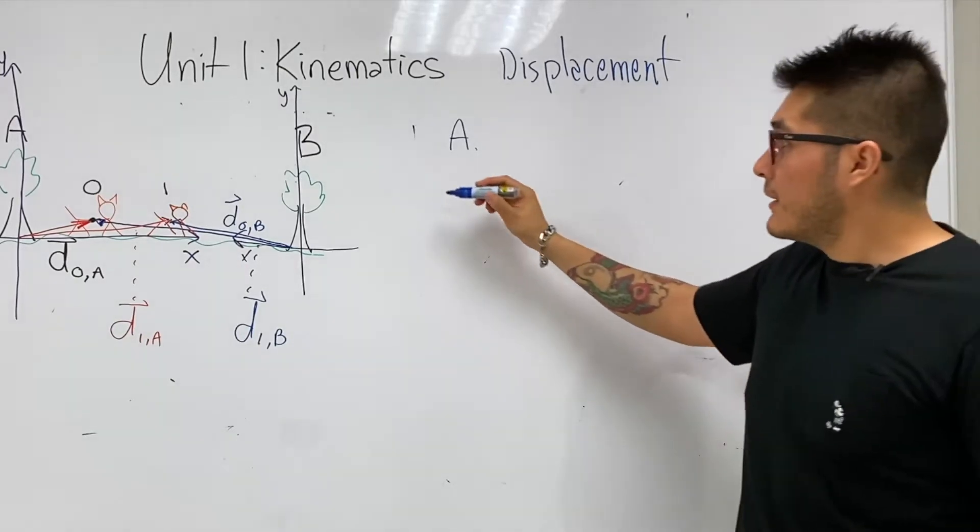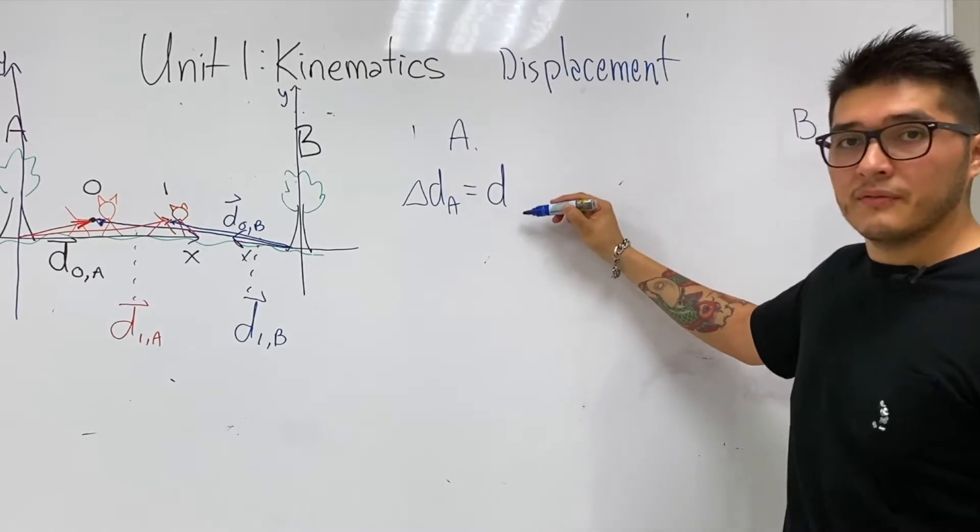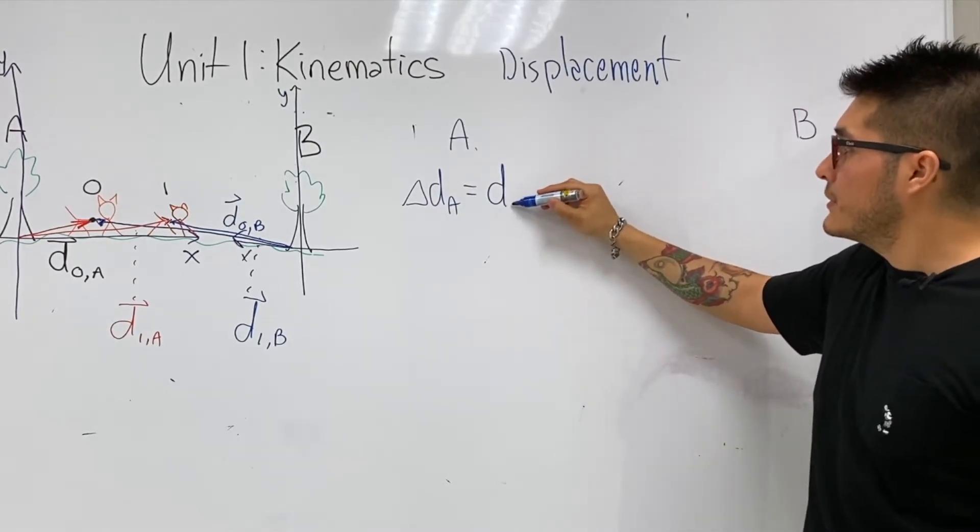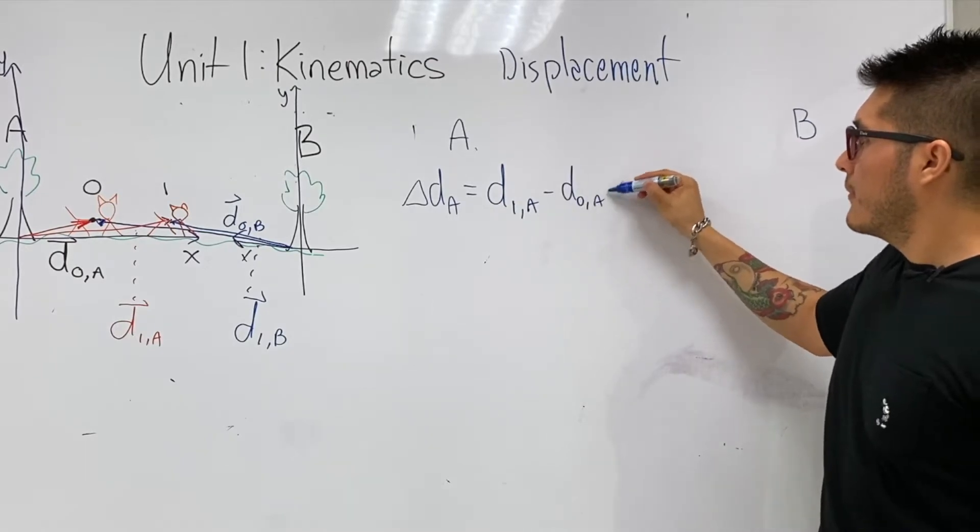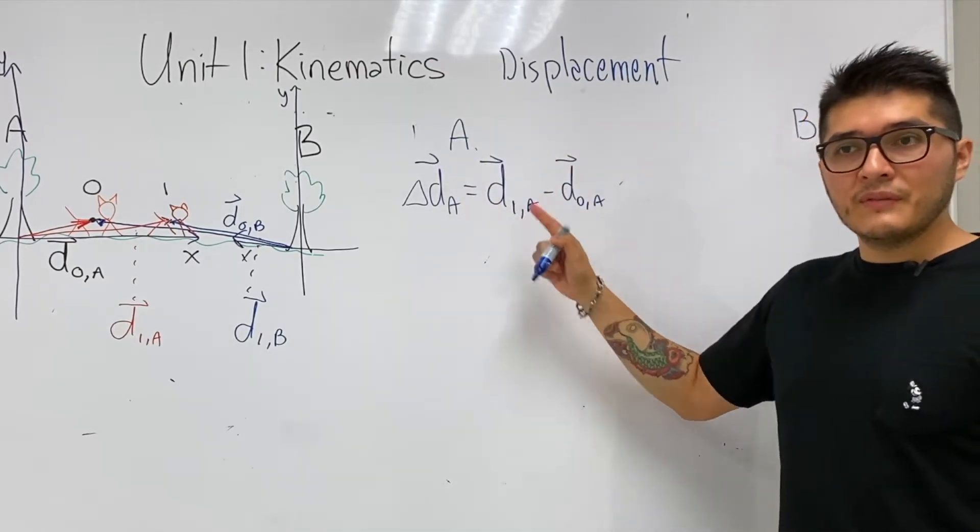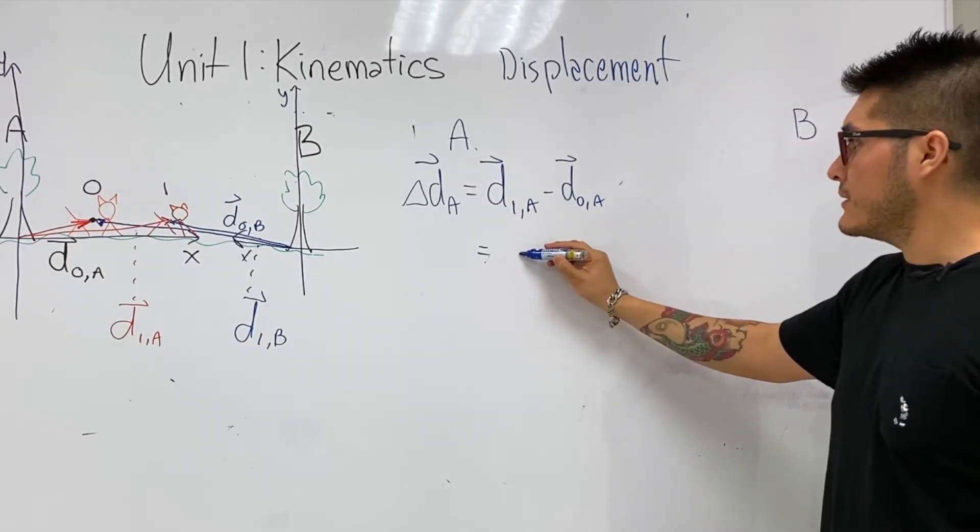So let's do the calculation for A, which was final vector, final position minus initial. But it turns out this is a vector subtraction. How do we approach it? We trick into thinking it's a sum.